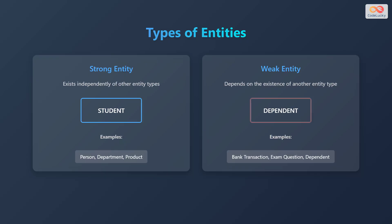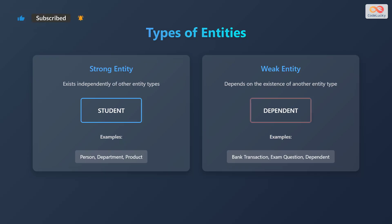In an ER diagram, strong entities are represented with a single rectangle, while weak entities are represented with a double rectangle.